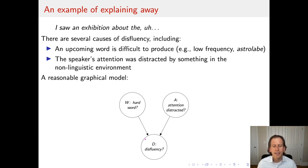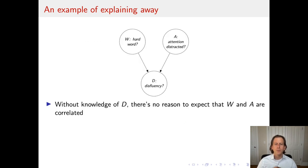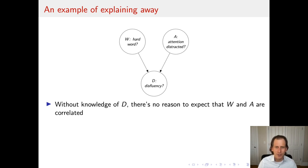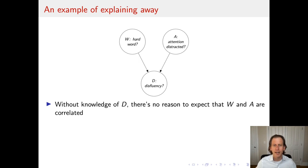This is a reasonable graphical model to capture this inference network. We define W as the random variable for whether the speaker was about to try to speak a hard word, A as whether their attention was distracted, and D as whether they utter a disfluency. D is downstream of both W and A. Without knowledge of D, there's no reason to expect W and A to be correlated — whether I'm about to say a hard word is not causally related to whether a bird flies into my window.